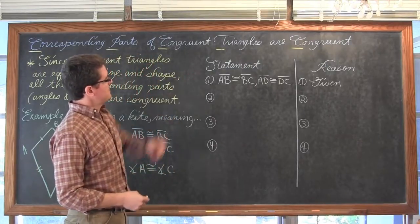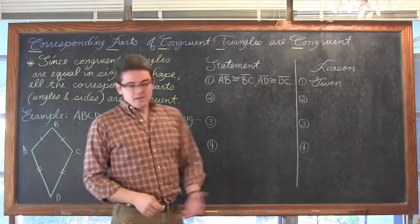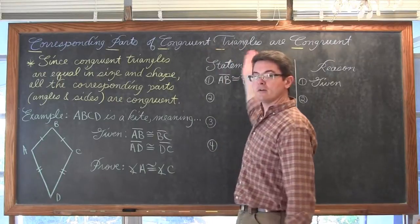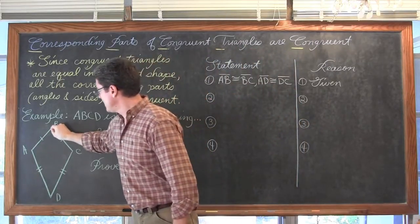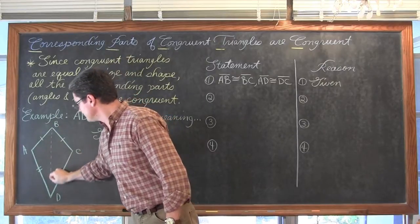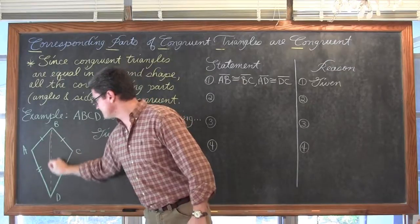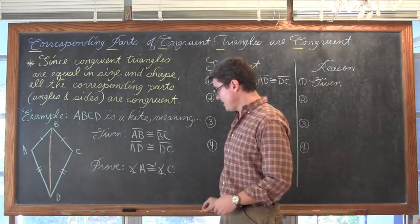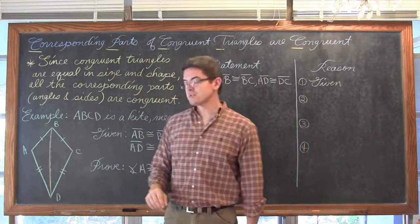So our statement is angle AS. Again these segments are congruent and so are these. Well at this point it says congruent triangles, and my diagram doesn't have any triangles in it. So let's drop down a diagonal that goes from vertex B to vertex D. Now I have actually got a couple of triangles in this kite that I am going to use to prove that angle A is congruent to angle C.